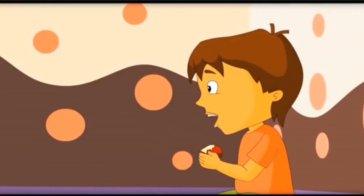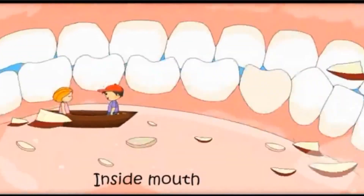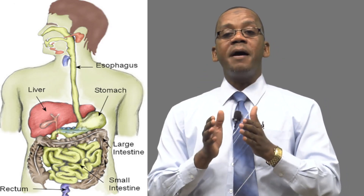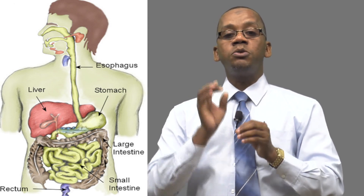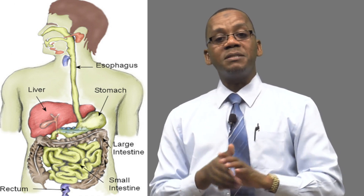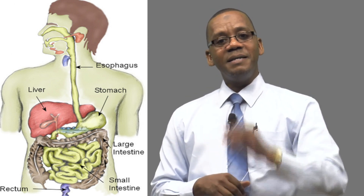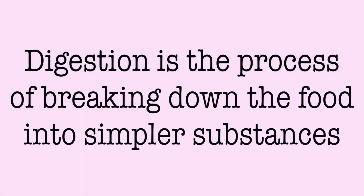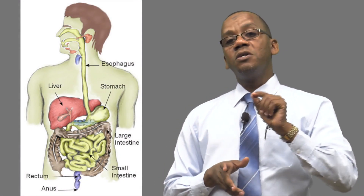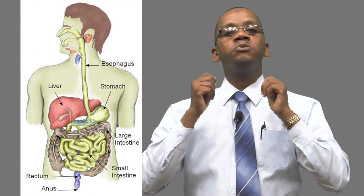There are teeth which break down the food into small particles. The mouth is the first part whereby the food is broken down into simpler substances. The process of breaking down the food into simpler substances is called digestion.